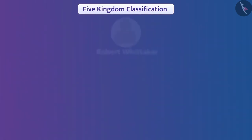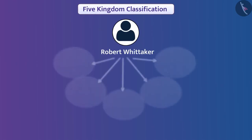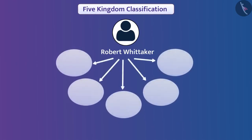The five kingdoms proposed by Whittaker are Monera, Protista, Fungi, Plantae, and Animalia. We will talk about them in upcoming videos.